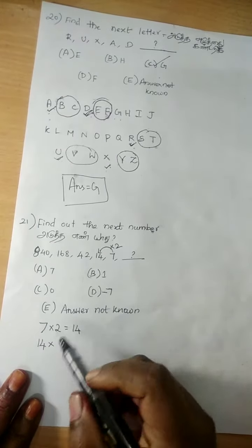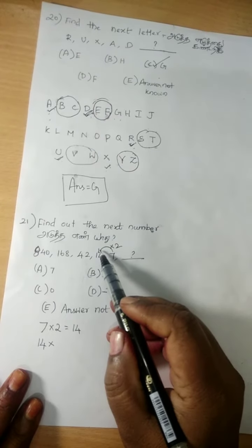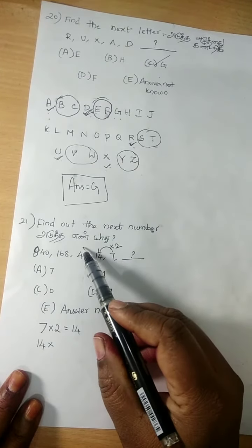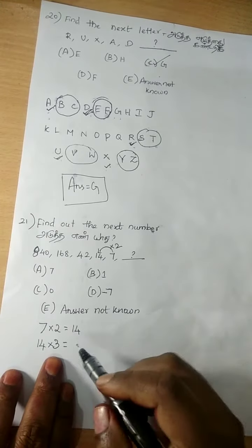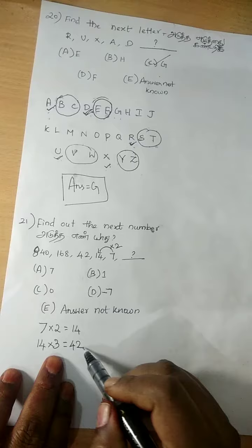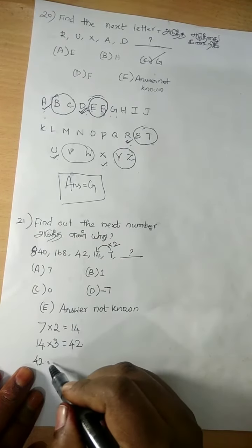The next number 14, and then what we get? 42. Yes, if you multiply it by 3, we will get 42. And then again, 42 is the number.